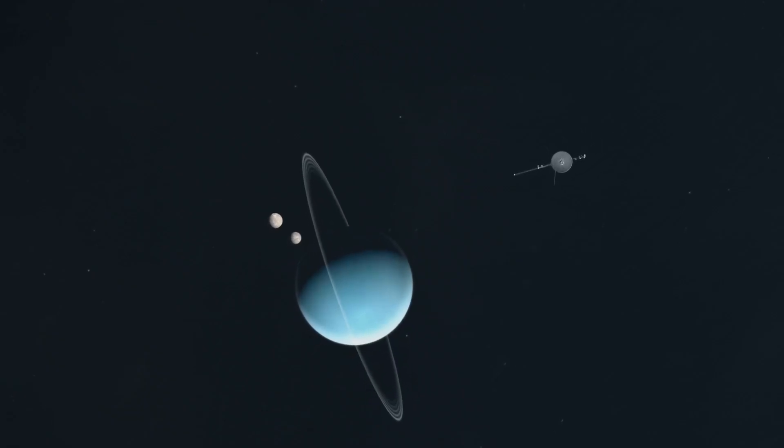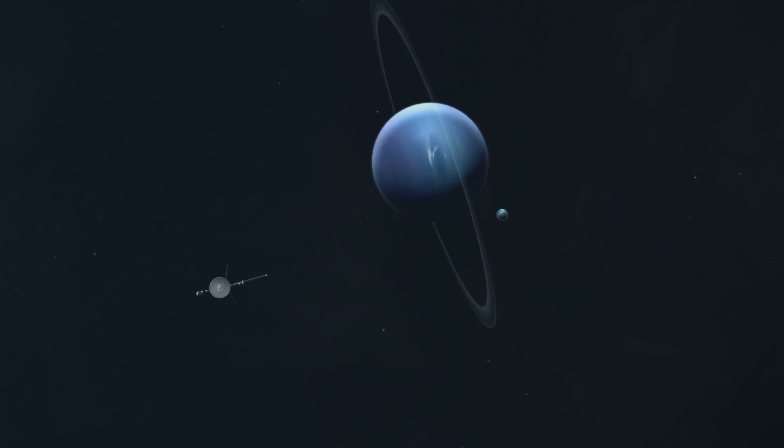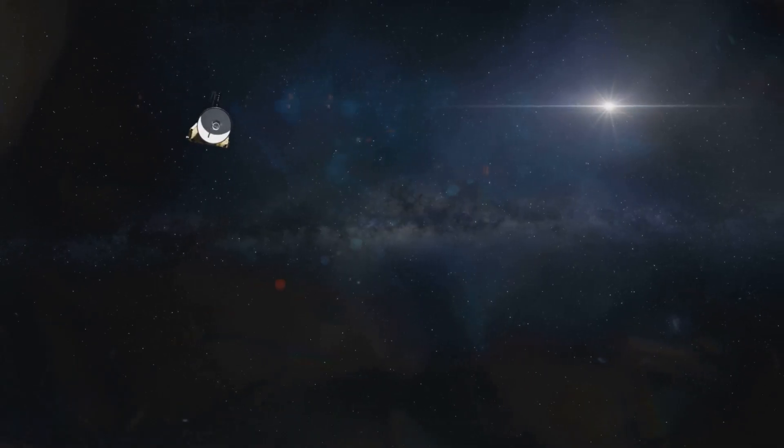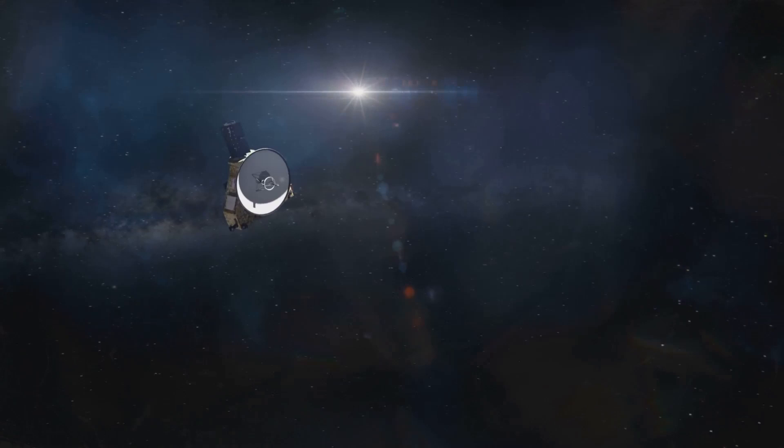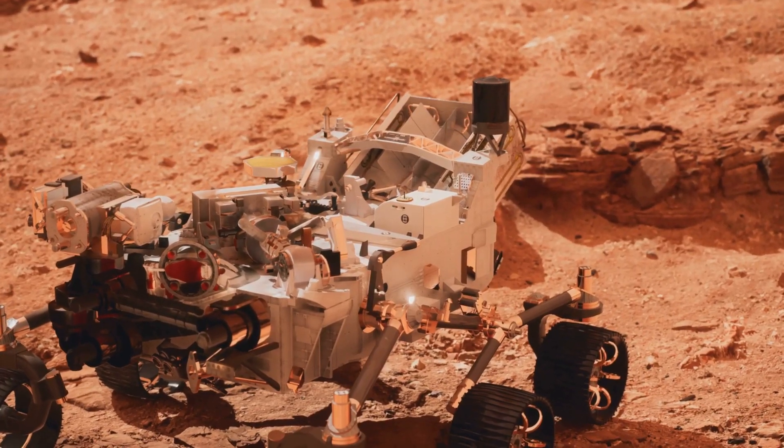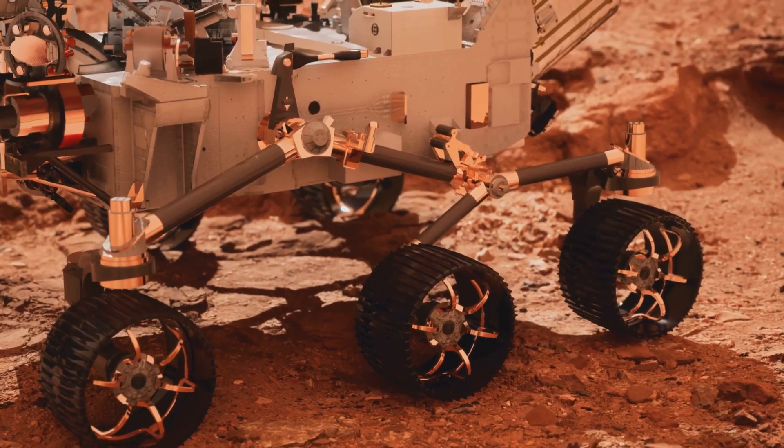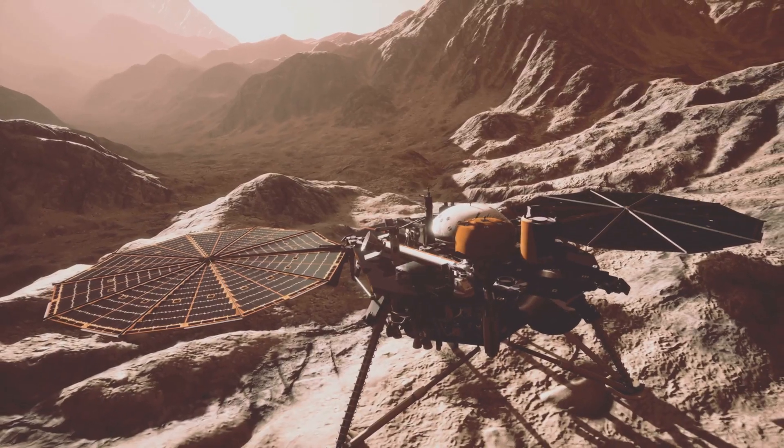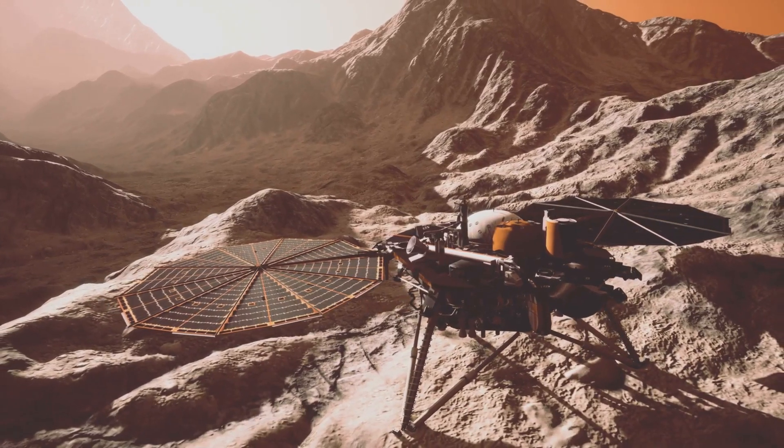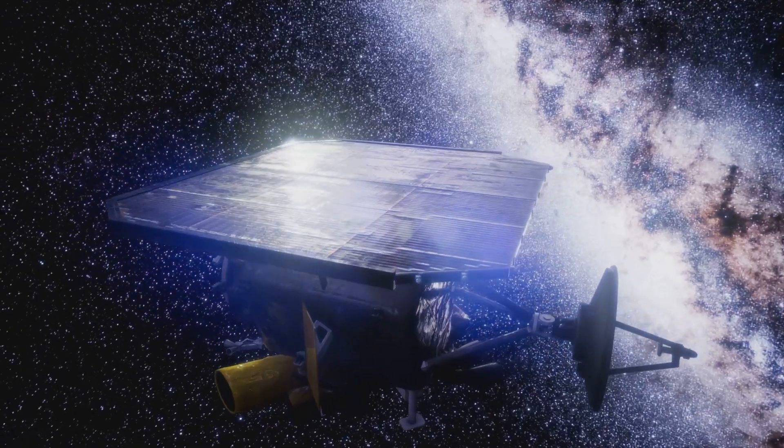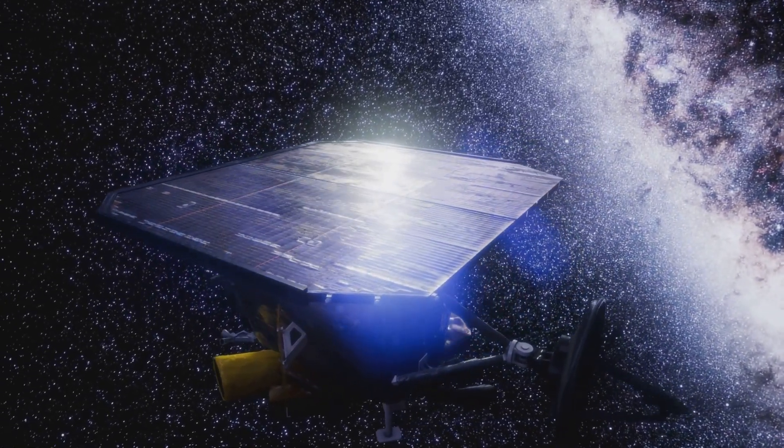Famous missions like the Voyager probes, which are now in interstellar space, the Cassini mission that orbited Saturn for over a decade, and the New Horizons probe that flew by Pluto, were all powered by plutonium. The Curiosity and Perseverance rovers currently exploring the surface of Mars also rely on RTGs. These generators provide the power needed to operate through the cold Martian nights and dusty seasons, when solar panels would struggle. They are the unsung heroes of deep space exploration.